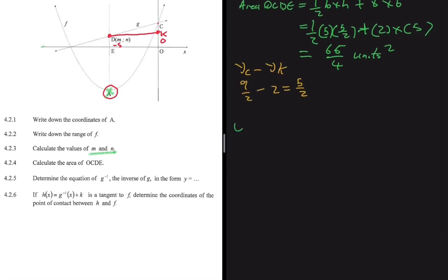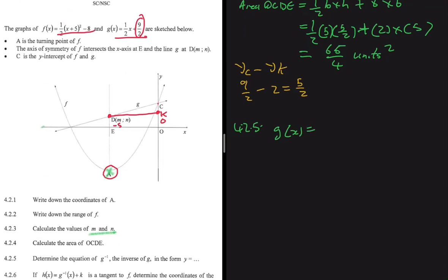For 4.2.5, let's determine the equation of the inverse of g in the form y = ... We know that g(x) = ½x + 9/2.